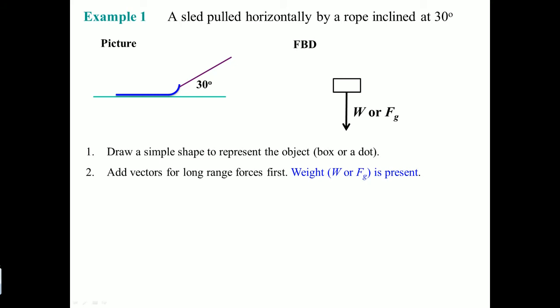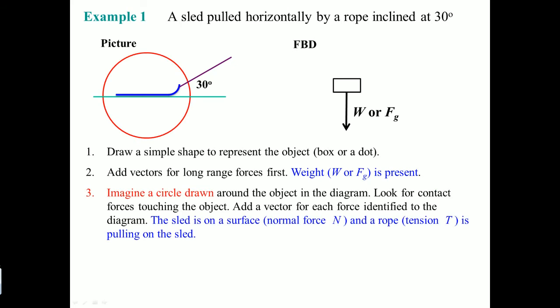You're going to imagine a circle being drawn around the object in the diagram. Look for contact forces touching the object. Add all those vectors for each force identically to the diagram. The fact that this object is on a surface means there is a normal force going up, and as well there is a tension force. That tension force is along the direction of the rope.